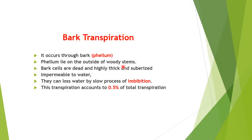Bark transpiration occurs through bark or phellum. Phellum lies on the outside of the woody stem. Bark cells are dead and highly thickened — suberized — and are impermeable to water. They can lose water by the slow process of imbibition. This transpiration accounts for 0.5% of total transpiration. These were the types of transpiration as per their structure involved in a plant.